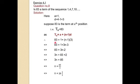So 83 equals 1 plus n minus 1 into 3, which gives 83 equals 1 plus 3n minus 3, that is 83 equals 3n minus 2. Moving 2 to the other side: 3n equals 83 plus 2, so 3n equals 85. Therefore n equals 85 divided by 3.